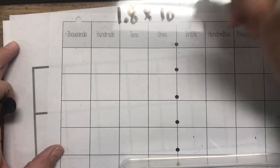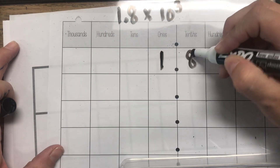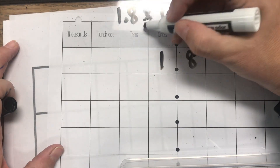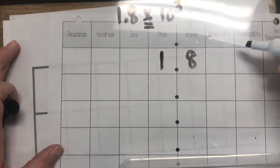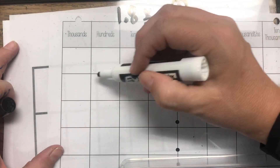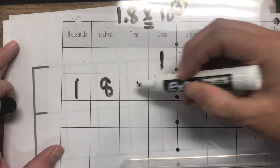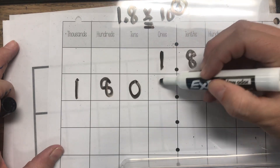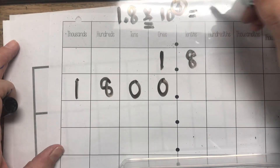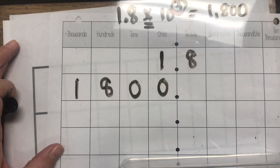Let's do 1.8 multiplied by ten to the third. I'm going to shift to the left so that my number gets bigger, and I'm going to shift three times — once, twice, three times. Then I have two placeholder spots to fill in with zeros. So 1.8 times ten to the third power is 1,800.